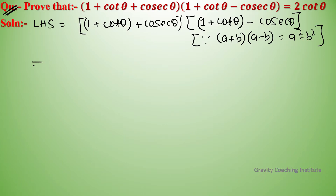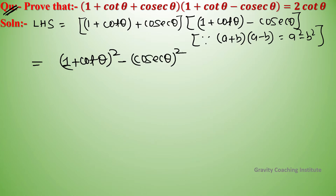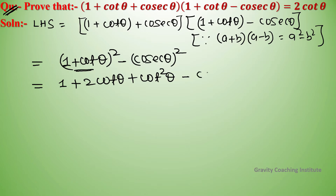Applying the identity, this becomes (1 + cot θ)² - cosec²θ. Expanding using the (A + B)² identity, we get 1² + 2 cot θ + cot²θ - cosec²θ.